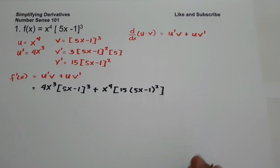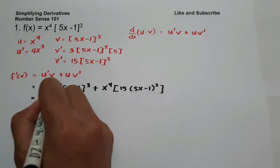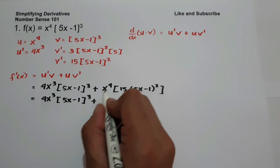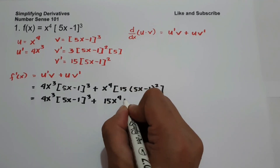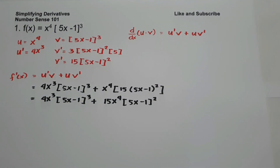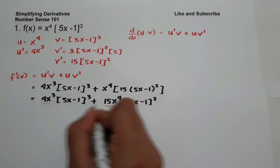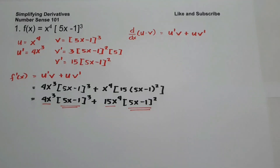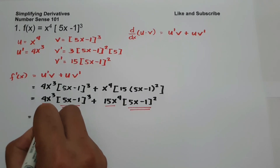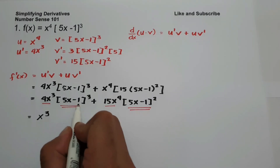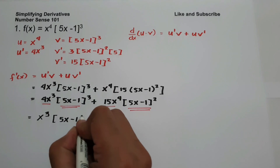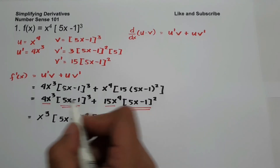So let us simplify. The greatest common factor of 4x³ and 15x raised to 4 is x³. And then the greatest common factor of 5x minus 1 raised to 3 and 5x minus 1 raised to 2 is 5x minus 1 raised to 2.